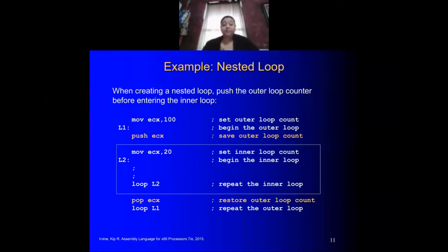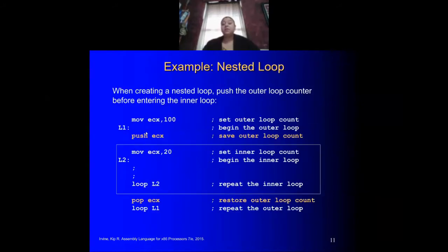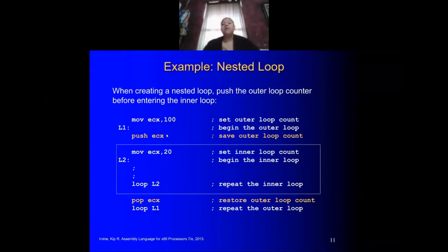Here is an example of nested loop usage. In a previous example, when moving a value into the counter ECX, we moved ECX into a separate variable. Now instead of creating an extra variable, we simply use the stack. We push the value of ECX — which holds 100 — onto the stack, then reuse the counter by loading 20.